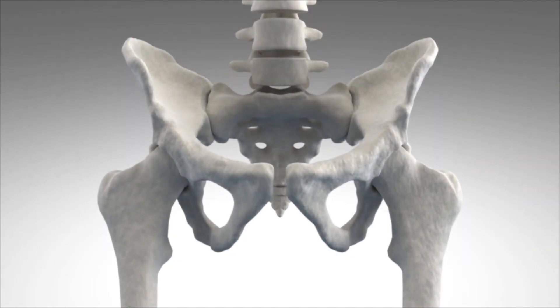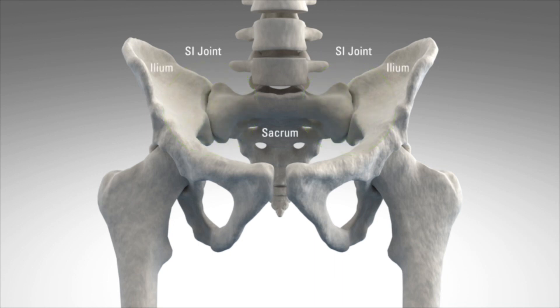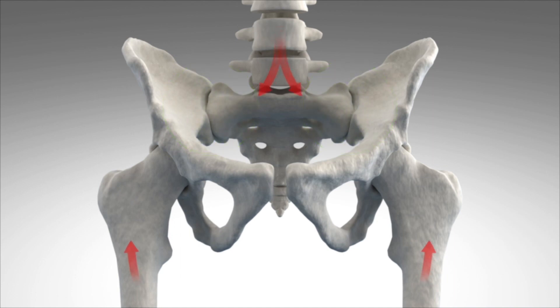The sacroiliac joint, or SI joint, is located in the pelvis linking the iliac bones to the sacrum. The SI joint is stabilized by a network of ligaments and muscles which also limit motion. The normal sacroiliac joint moves only a small amount.